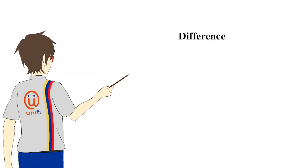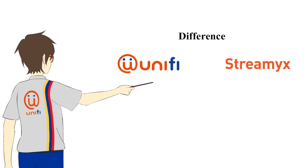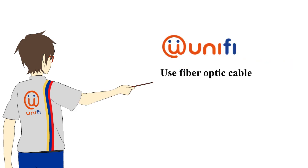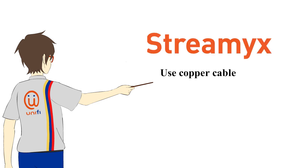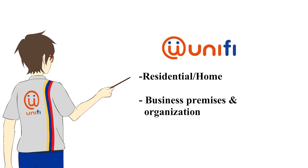What are the differences between Unify and C-Mix? Unify is using fiber optic cable while C-Mix is using copper cable. Unify is divided into two options which are Unify for residential or home and Unify for business premises or organization.